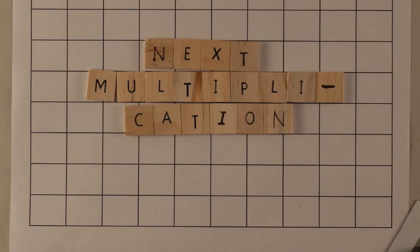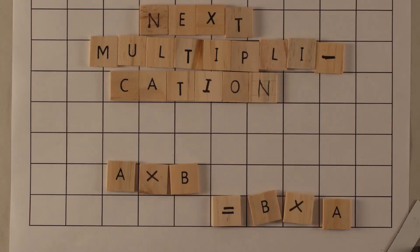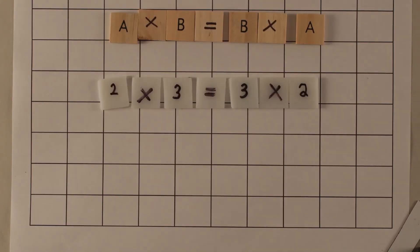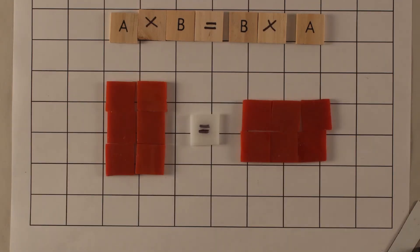Let's try multiplication now. A times B equals B times A. 2 times 3 equals 3 times 2. We're going to do it in tiles now. 3 rows of 2 equals 2 rows of 3, or 6 tiles equals 6 tiles.